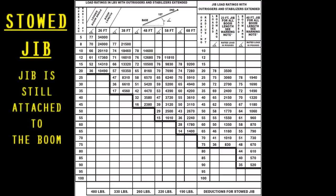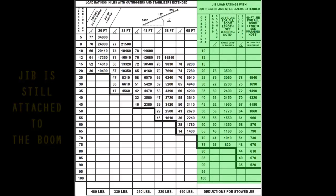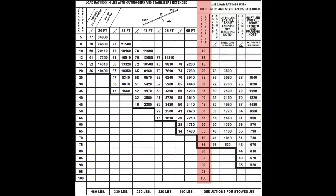The second half of the load chart includes the jib load ratings without outriggers and stabilizers extended. You'll notice there is an operating radius measured in feet as well as the loaded boom angle. The two jibs are measured in 23-foot and 40-foot sections.